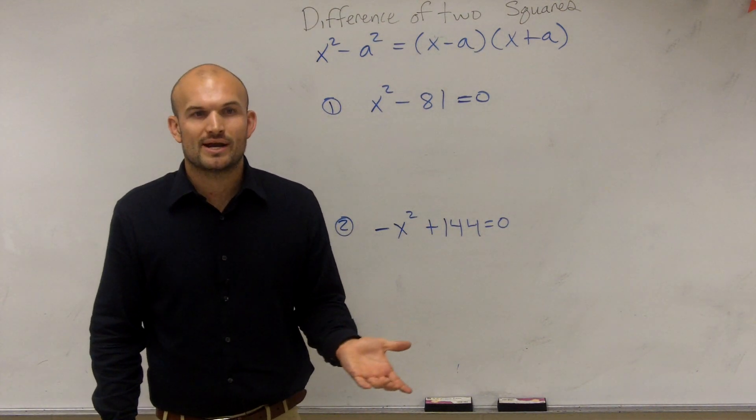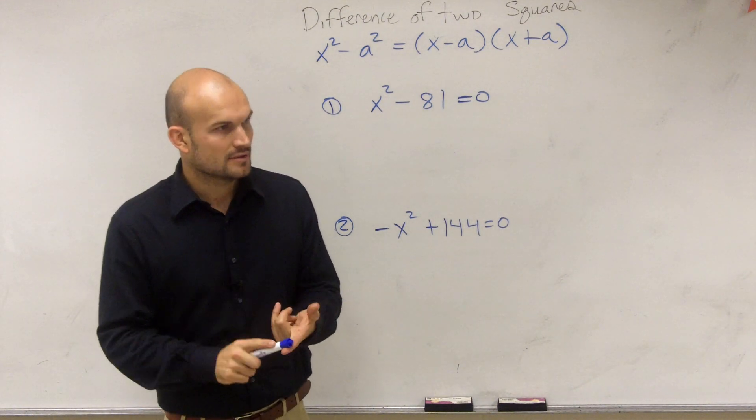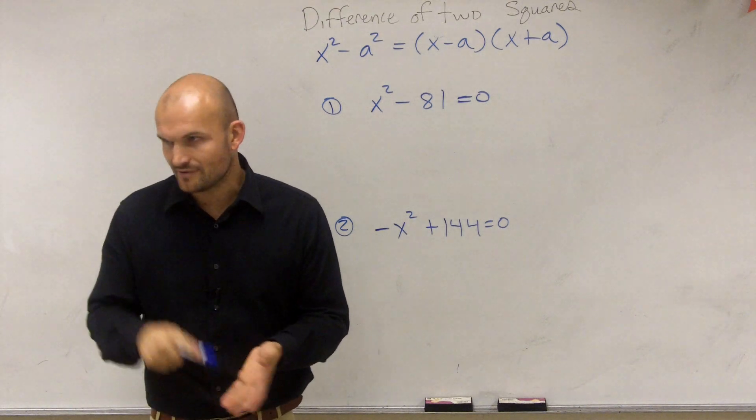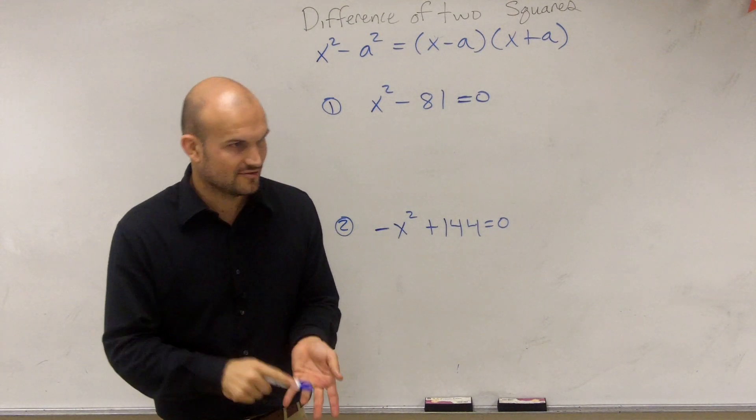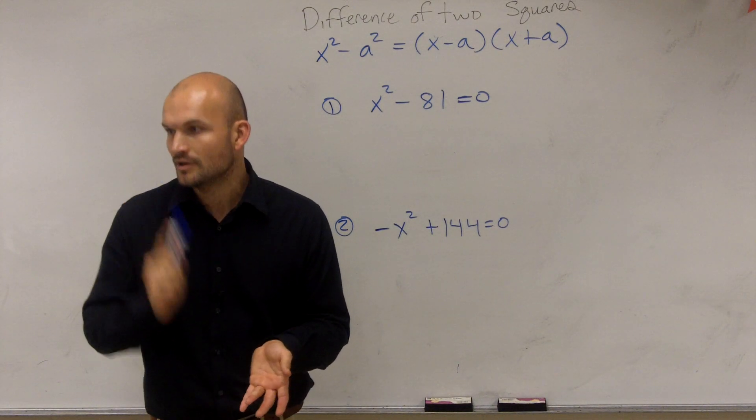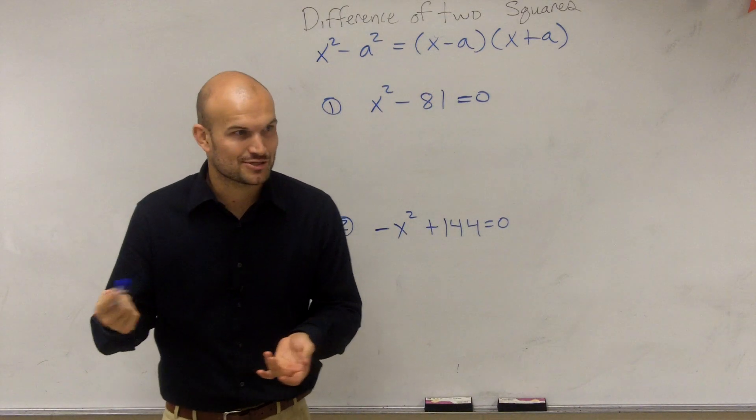So just think about what that says. Squares, meaning you're going to be dealing with square numbers, right? Number squared: 4, 9, 16, 25, 36, 49, 64, 81, 100, 121, 144, 169, 196, 225, right? You guys should know all those, hopefully.